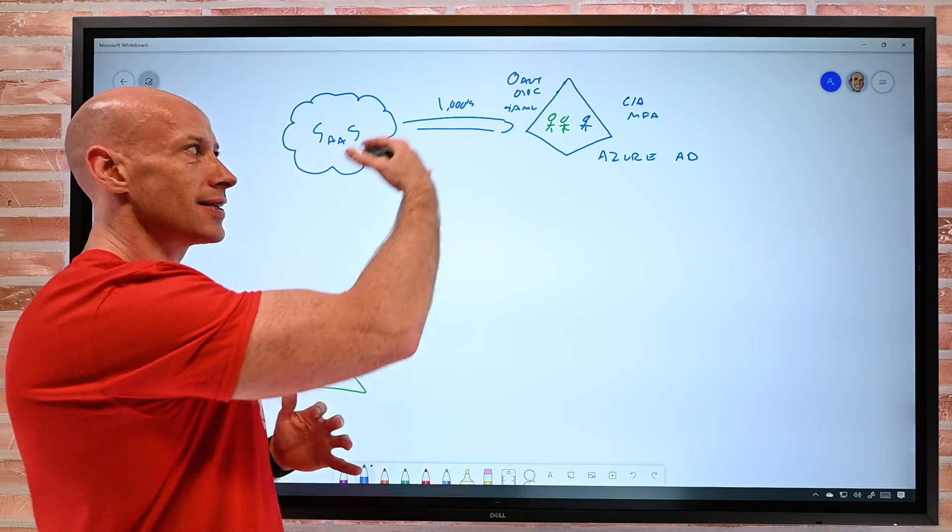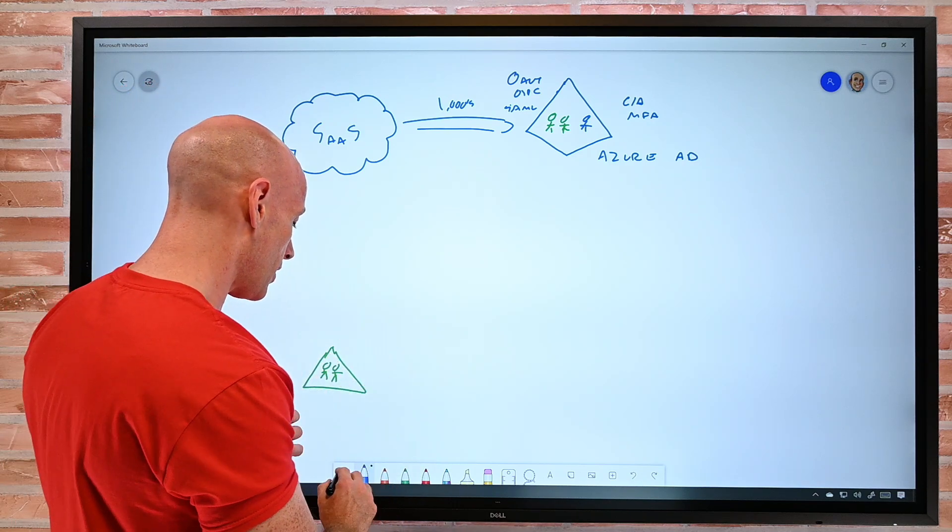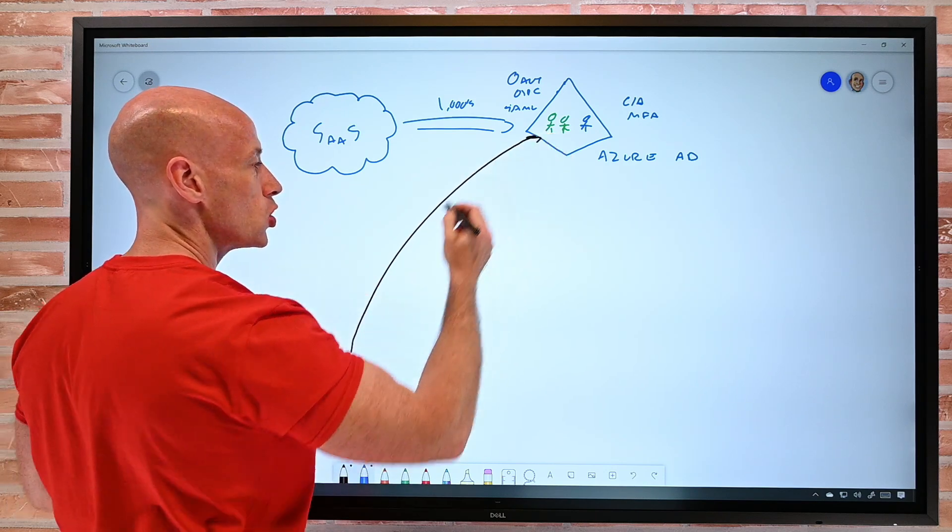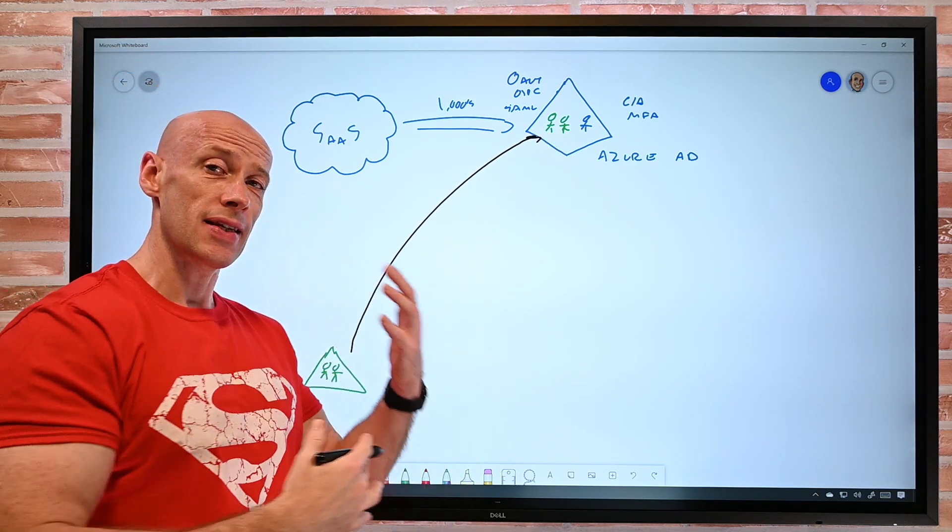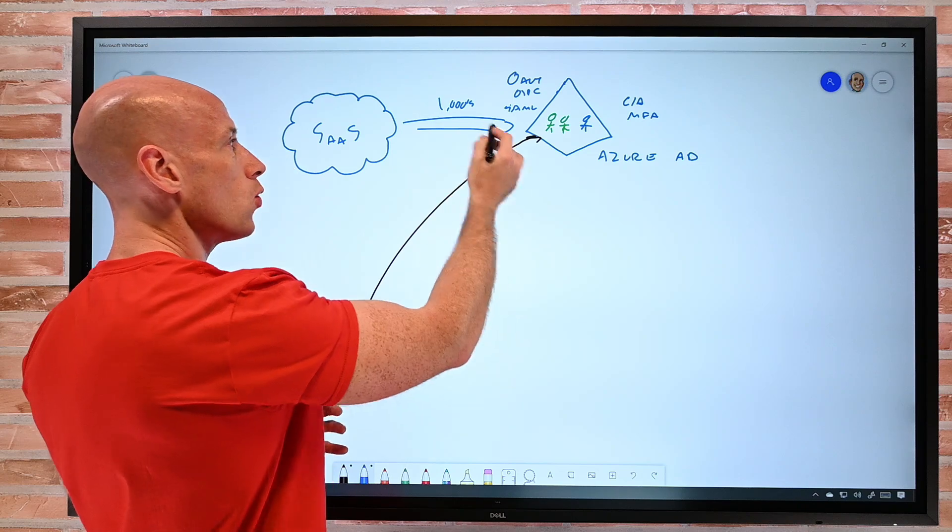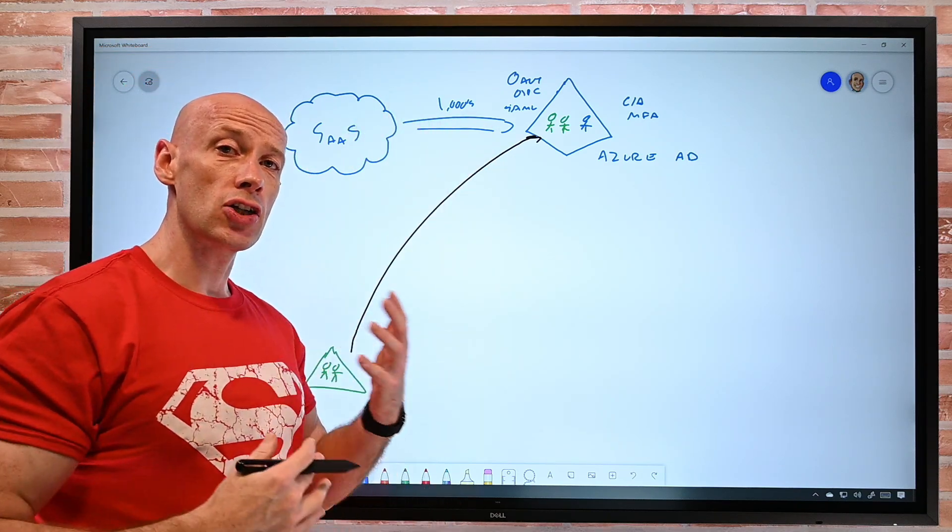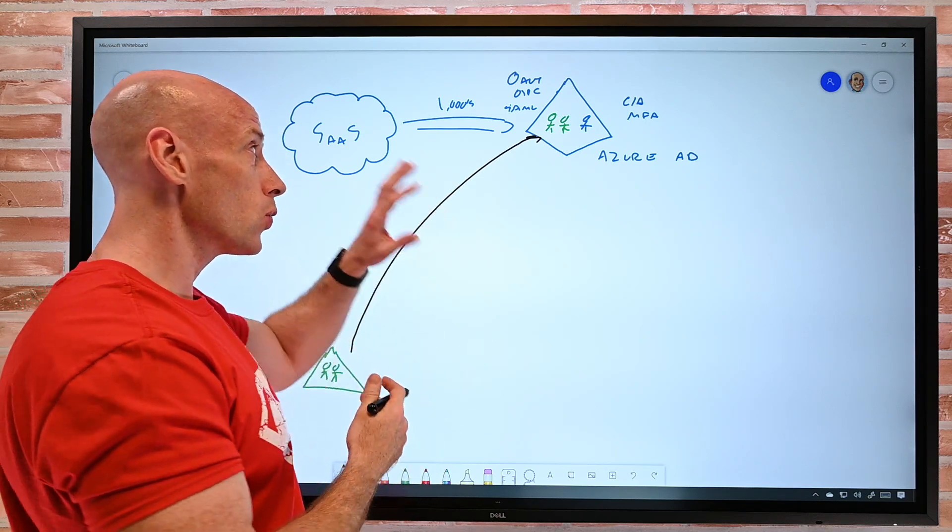Essentially, it's an identity provider that speaks cloud. And I can absolutely extend my identities through replication to Azure AD and get a seamless sign-on. But now all those cloud applications, it's got those thousands of federations for me. So I can do single sign-on to all those apps.